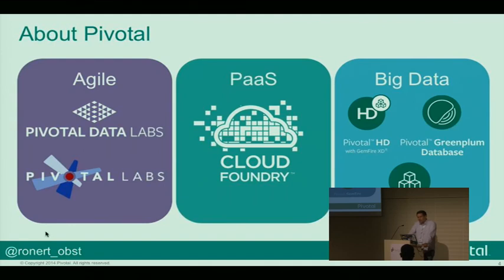We also have a very competitive big data suite. We have a Hadoop distribution called Pivotal HD. We have a massively parallel processing database — we're actually the market leader there — it's called Greenplum, and we have an in-memory database called Gemfire.